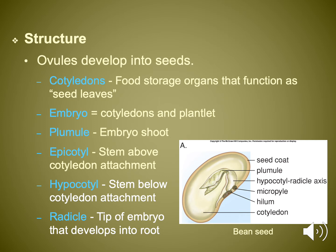Inside the seed you will see several features. First, the cotyledons — these are referred to as seed leaves. They are storage structures that are also capable of doing photosynthesis, and they're typically the first things you see above the soil. Monocots and dicots get their name from the number of seed leaves that appear. Inside the seed you also have the epicotyl and hypocotyl, which are essentially developing stems, and the radicle, which develops into the root.